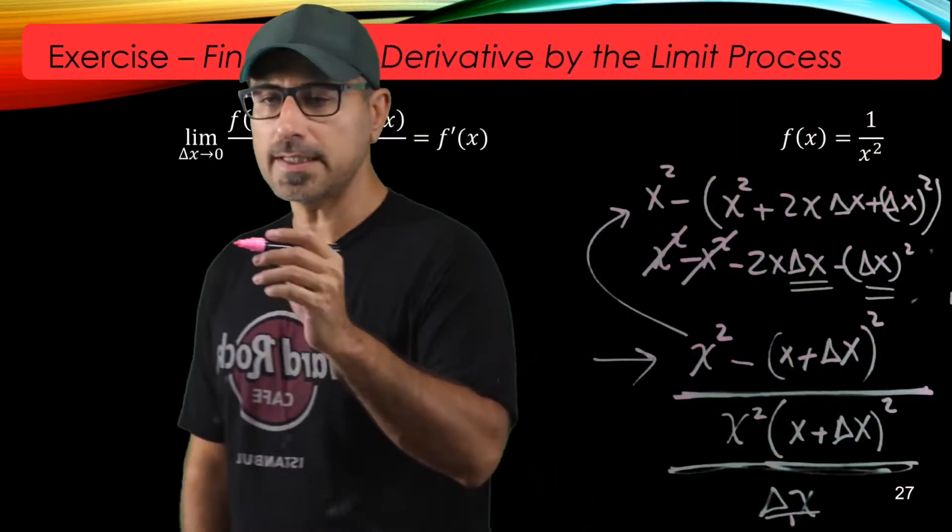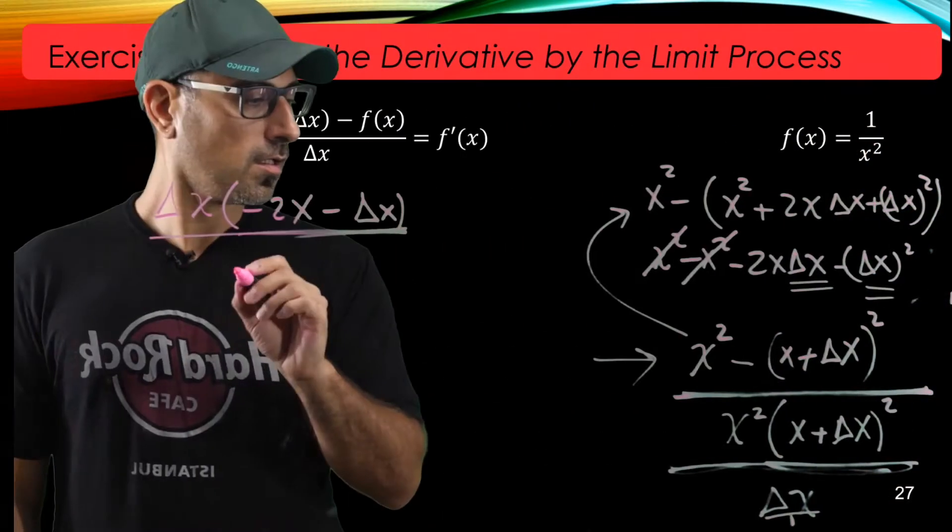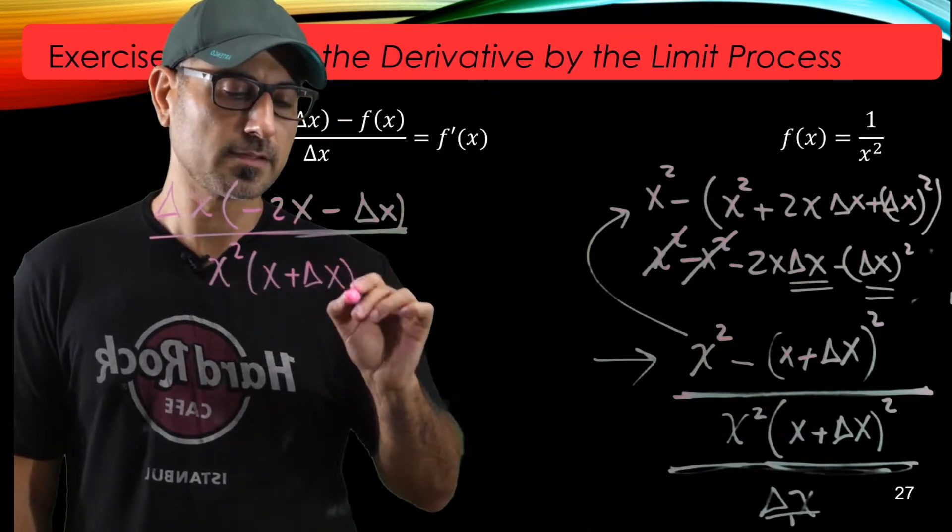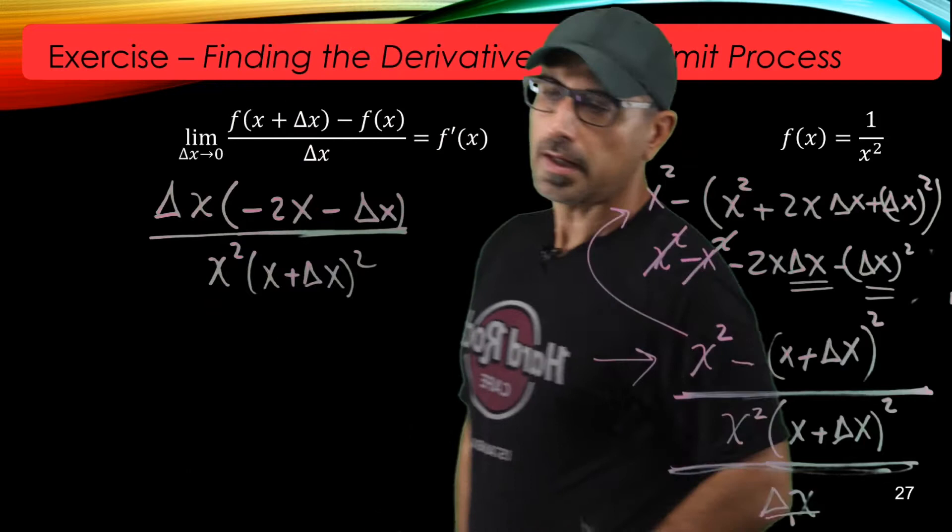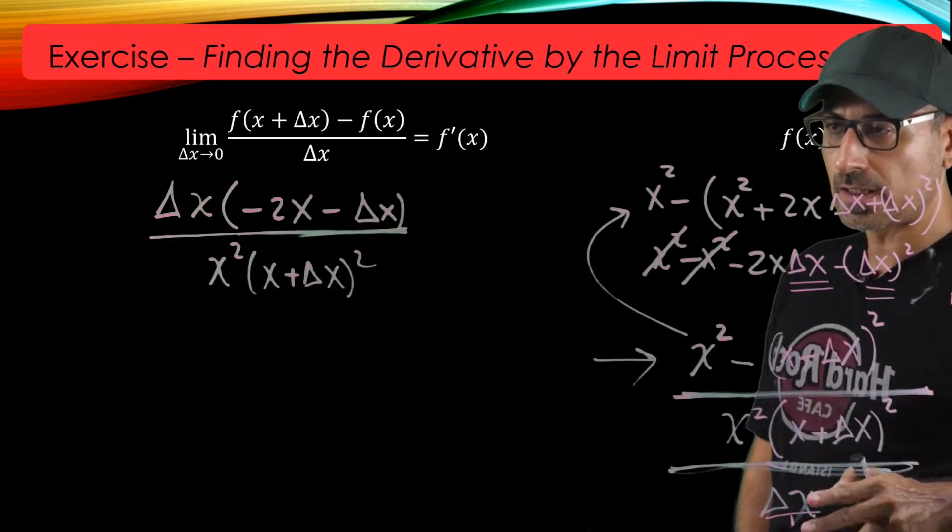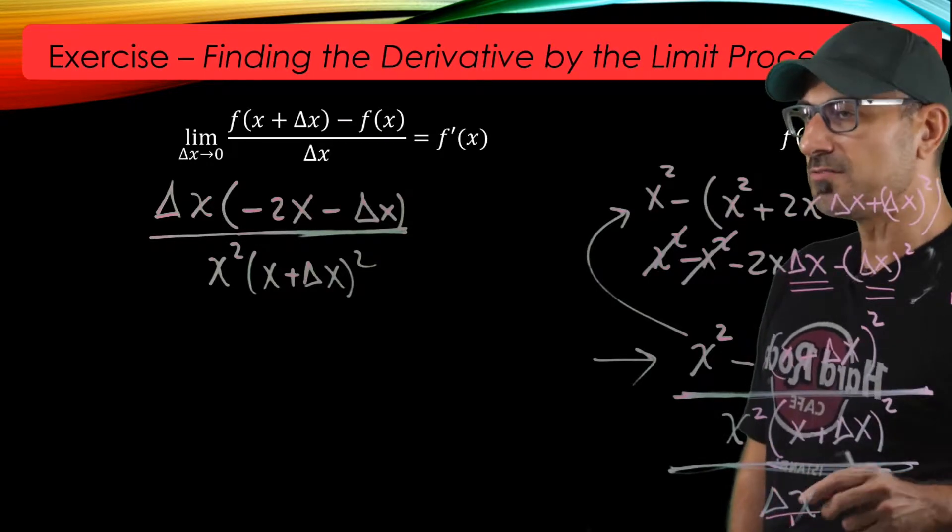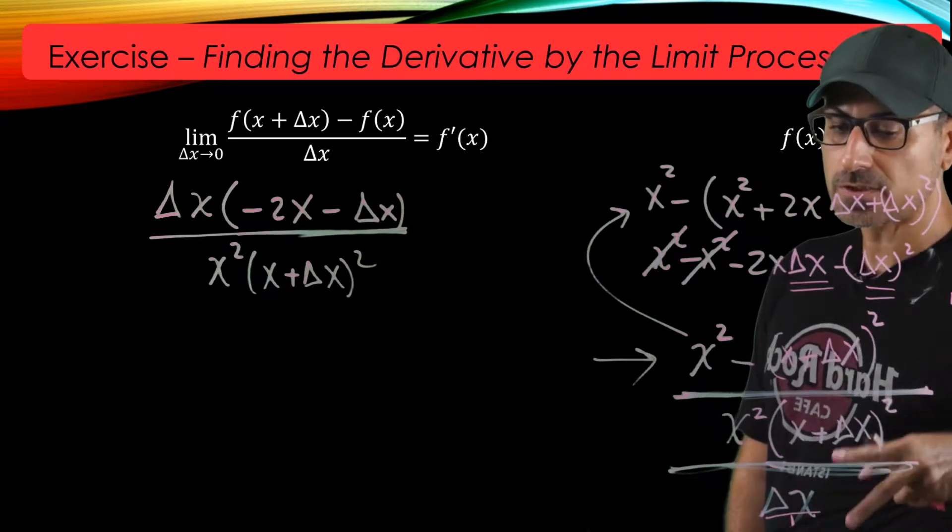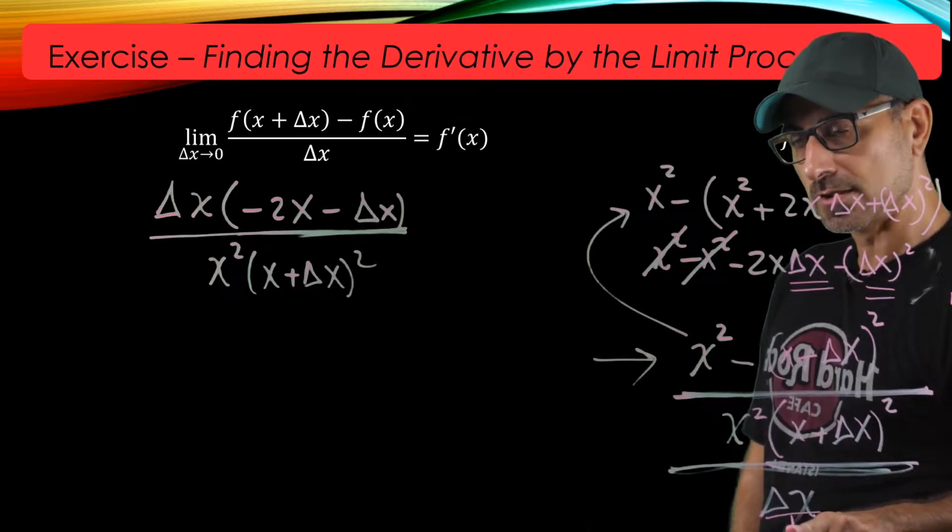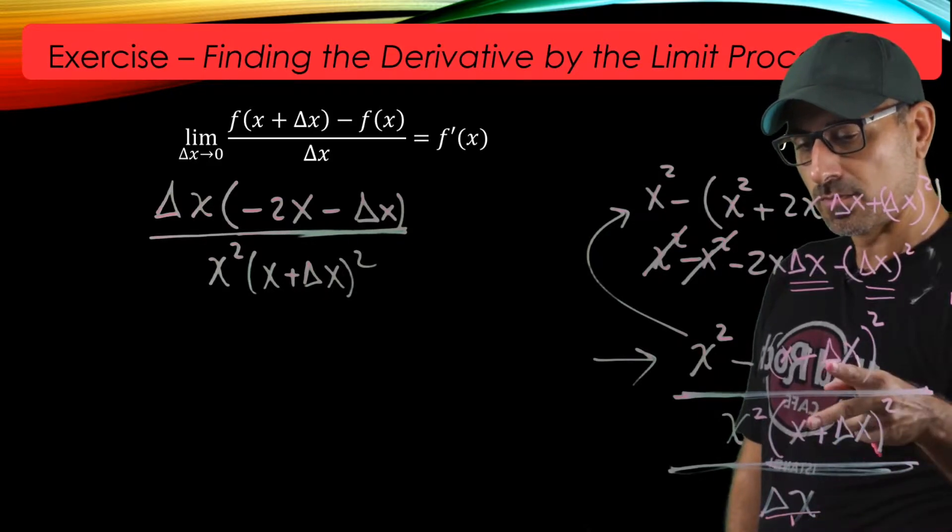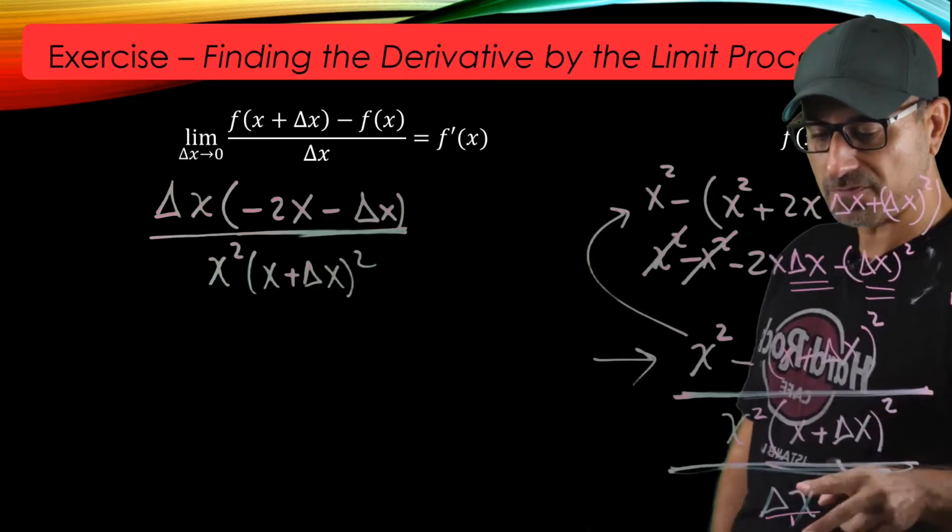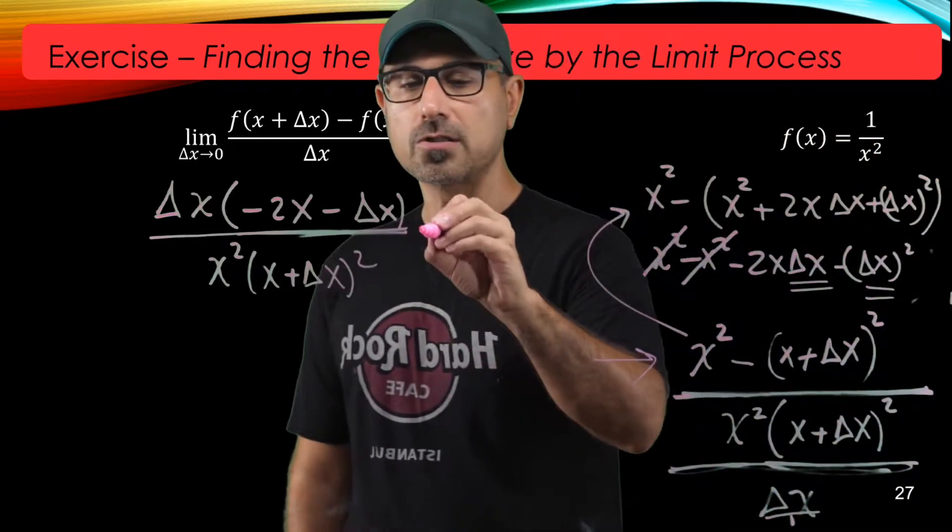All right, so delta x factored out, x squared, x plus delta x squared. As you see, there is a delta x term here. So this is a rational expression dividing just delta x. But we want to make it look like a rational expression dividing a rational expression. So for that reason I can put a 1 here underneath. And then when you do division of two rationals, you flip the bottom over. So I'm going to flip this as 1 over delta x.